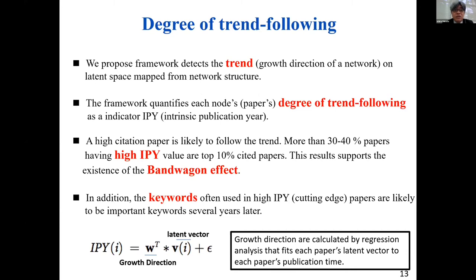We train a regression model that fits each paper's latent vector obtained by NRL to each paper's publication time. The model grasps the growth direction of the citation network. Subsequently, we estimate each paper's intrinsic publication year, IPI — not the real publication year — by fitting the regression model to each paper's latent vector. Therefore, IPI represents the degree of trend-following of each paper. Papers that have a high or young IPI value are inferred to be located on the cutting edge. We confirm that this indicator, IPI, is useful for predicting the future citation count and the future frequently used words in the domain.